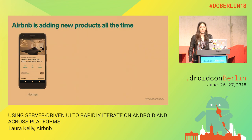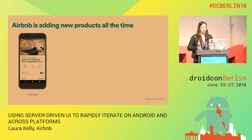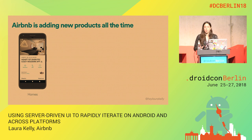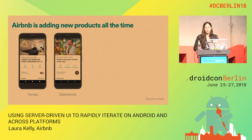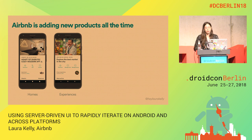Airbnb started as a homes business, where people can book a place to stay when they're traveling on vacation. We have a screen that looks kind of like this to show you the details of your reservation — things like directions, how to contact the host, that type of information. In 2016, Airbnb launched a product that really changed how we think about a trip: we launched something called Experiences. An experience is an activity hosted by a local expert that you can book when you're traveling to a new place. When we built out Experiences, we built out a reservation screen for that as well, and as you can see, it looks pretty similar to the home reservation screen, with a couple tweaks.